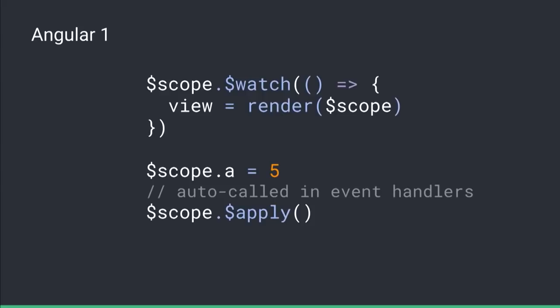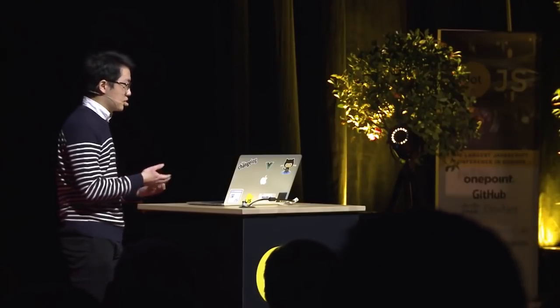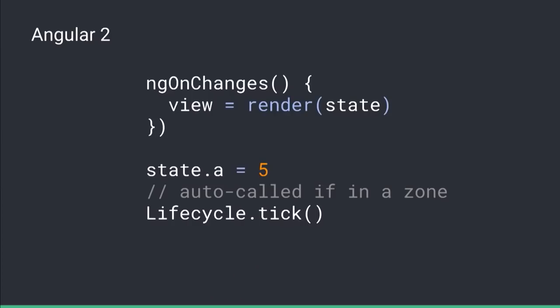Angular 1 is basically just doing a scope.$watch — watching for any change on the scope — and when you need to change the state, you just set scope.a equals 5. If you do it manually you'll have to call scope.$apply, but Angular does the smart thing: if you assign the value in an event handler, it'll just assume something has changed and call apply for you. And in Angular 2, similarly, we have the lifecycle tick, and it's a bit smarter than Angular 1 because it has Zone.js, which knows that something initiated asynchronously from within an Angular event handler will just keep following that async zone and call lifecycle tick for you.